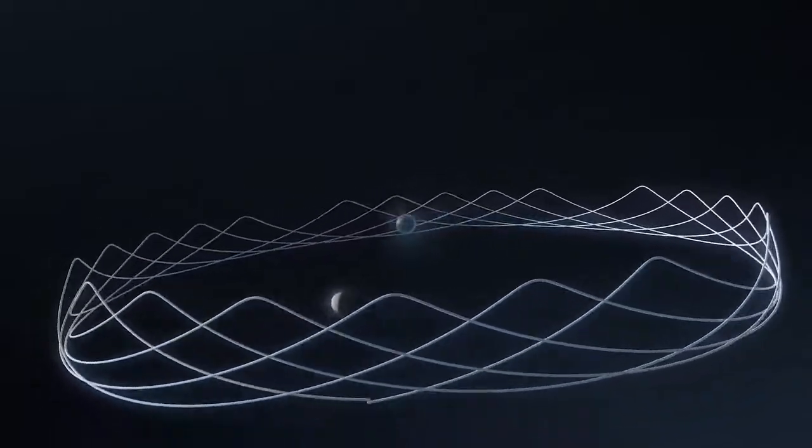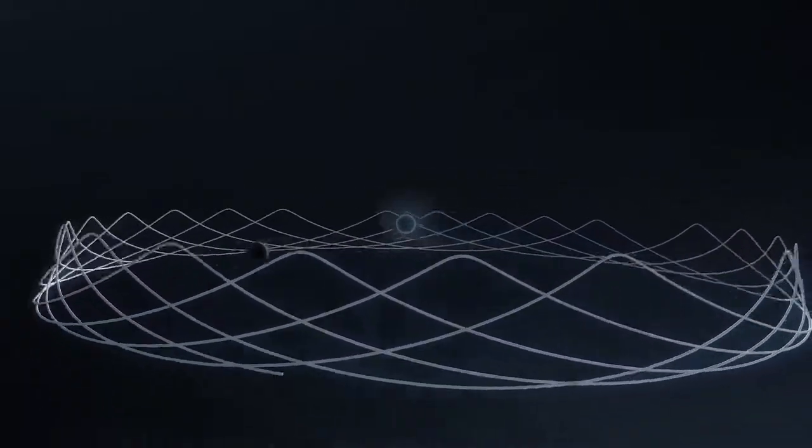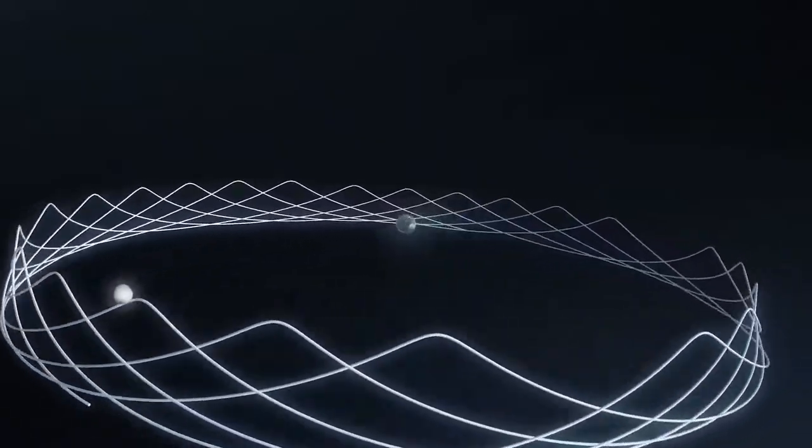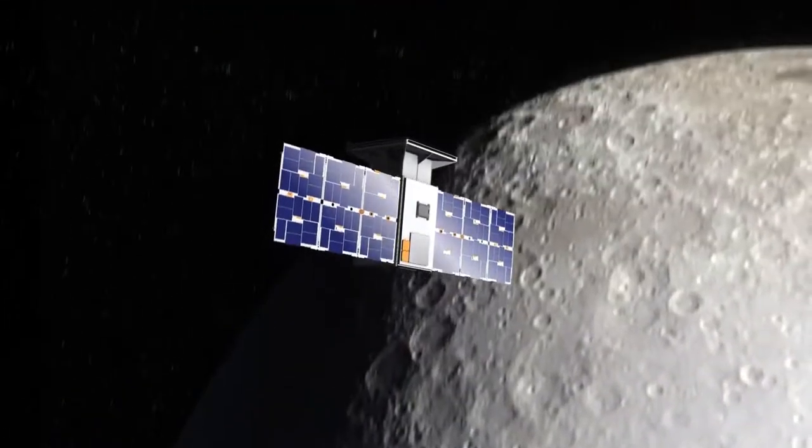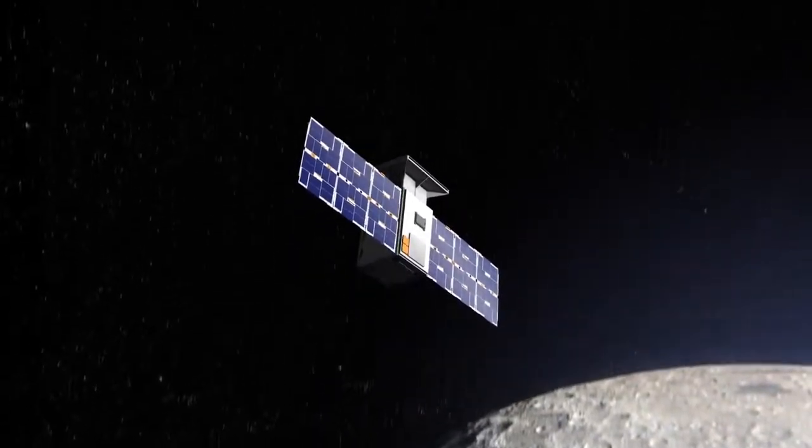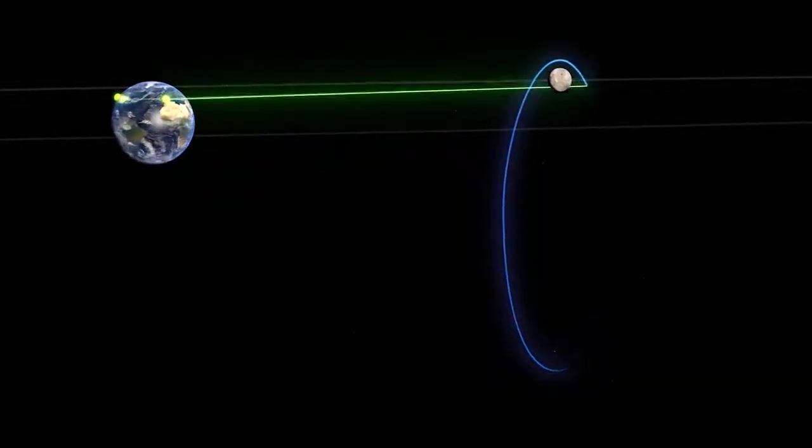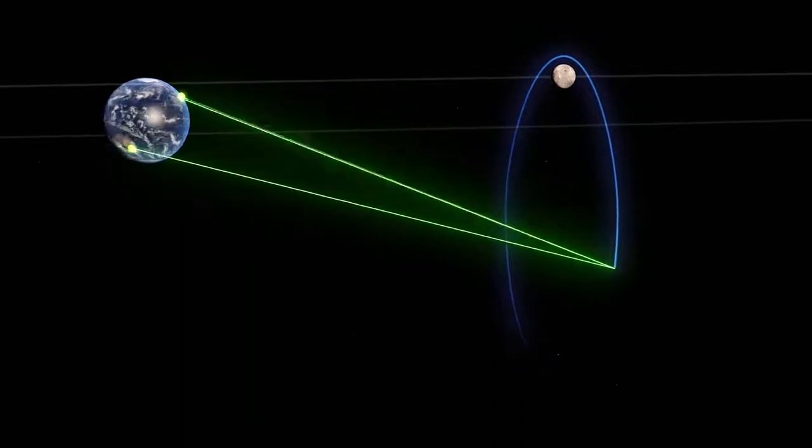it will gather data about this crown-shaped trajectory known as a near-rectilinear halo orbit. The path provides an unobstructed view of Earth as it orbits the Moon's poles and allows for continuous communications with ground-based control centers.